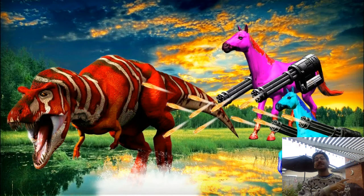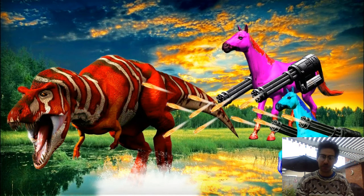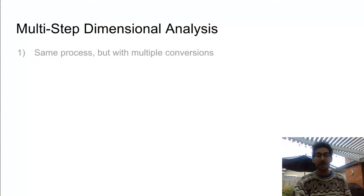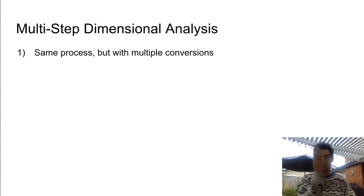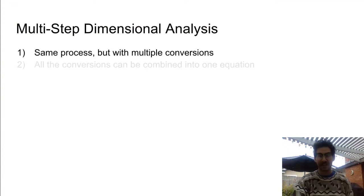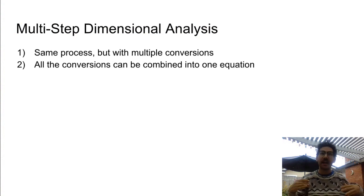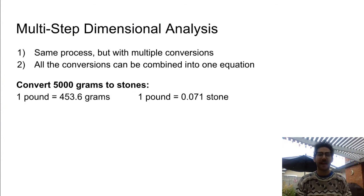That's how the dinosaurs went extinct — multicolored horses with guns. Not scientifically accurate. Now, multi-step dimensional analysis follows the same process, but you need multiple conversions to get from your starting unit to the desired unit. You can combine all the conversions into one equation for a clean single step.